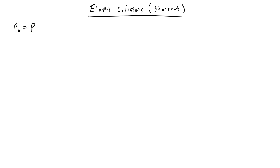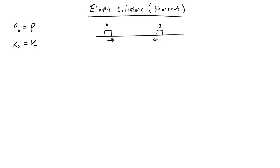It means that momentum is conserved, so the momentum at the beginning equals the momentum at the end, and kinetic energy is conserved. Another way of saying that momentum is conserved between two objects being hit is by calling one of those objects A and the other B — let's draw two objects going towards each other — is to say that the change in momentum of A is equal to the opposite change in momentum of B. And consequently, the change in kinetic energy of A is equal to the opposite change in kinetic energy of object B.